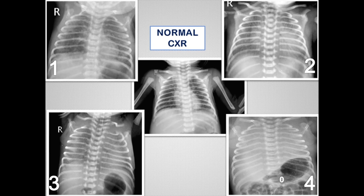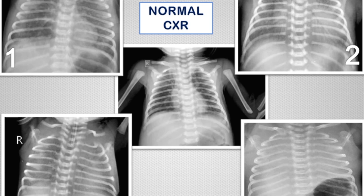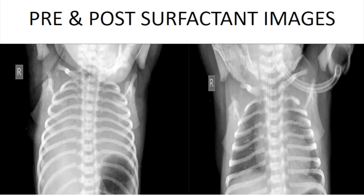Grade 1 and 2 RDS do not need intubation or ventilatory support, but importantly they need surfactant therapy, which is a magic drug. Here, the X-ray shows a child with Grade 4 HMD. Surfactant was given through the endotracheal tube, and the follow-up X-ray taken just 3 hours after surfactant therapy shows both lungs well expanded, diaphragmatic and cardiac margins well seen, and both lungs fairly well ventilated.